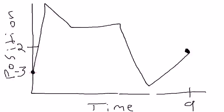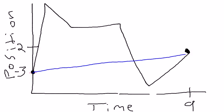Question number 10 asks us to find the average velocity over the whole time shown in this graph. To do this, you must find the slope — or, in other words, rise over run.